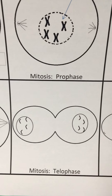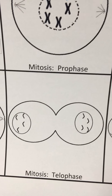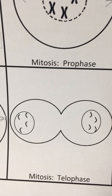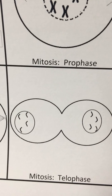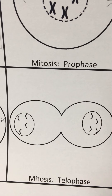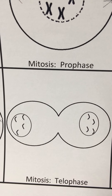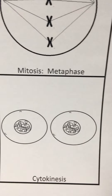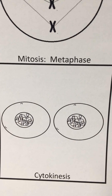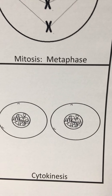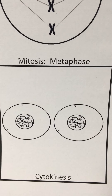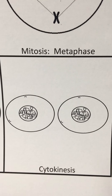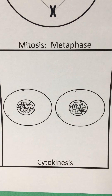After anaphase we have telophase, and our nuclear membranes have formed around the DNA on both ends of the cell. You can see that the cell is starting to bud or split apart into two daughter cells. When they split apart into two daughter cells and the DNA unwinds or loosens back up and turns into chromatin again, then we recognize that as cytokinesis.